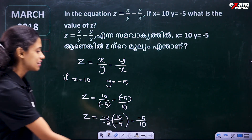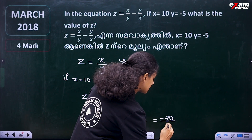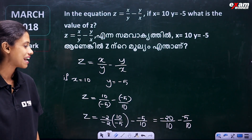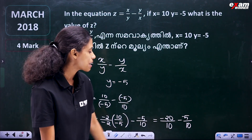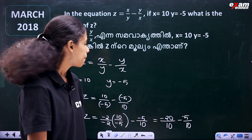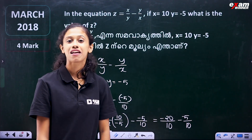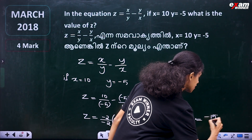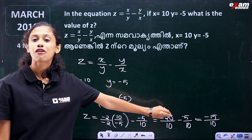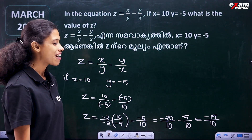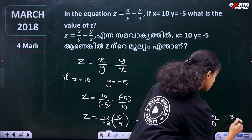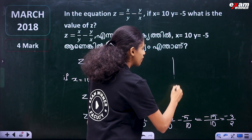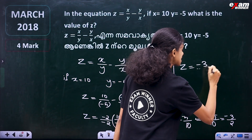That gives us minus 20 divided by 10, minus minus 5 by 10, which equals minus 15 divided by 10. Simplifying, that is minus 3 divided by 2. So Z is equal to minus 3 divided by 2.